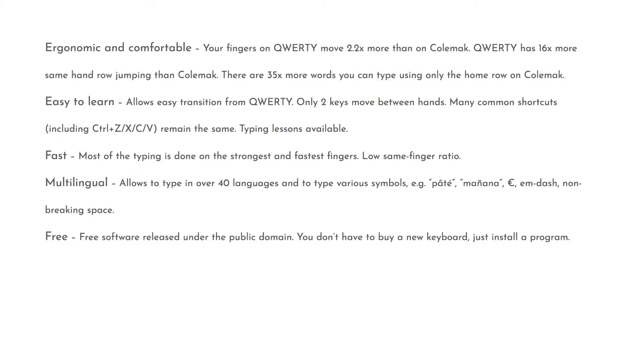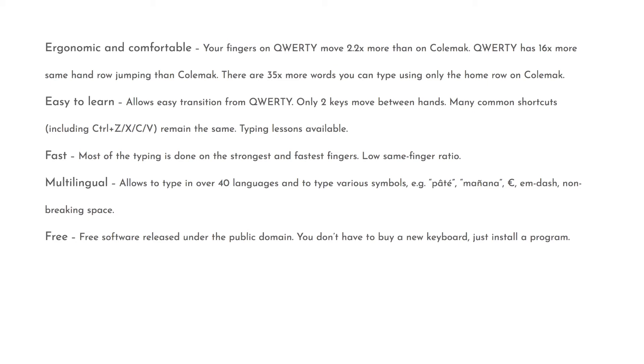Colemak wasn't really designed for the elite, so there's a lot of material out there on the internet to help you use it. Colemak is fast — most of the typing is done on the strongest and fastest fingers, and there's a low same-finger ratio, meaning your finger doesn't have to jump from one key to another to type a word. In QWERTY, we have to move our hand to achieve the same result. Colemak is more multilingual friendly — it works in 40 languages and with type symbols. Colemak is also free, released under public domain. You don't have to buy a new keyboard, just install a program.